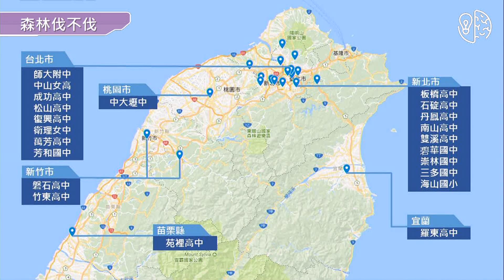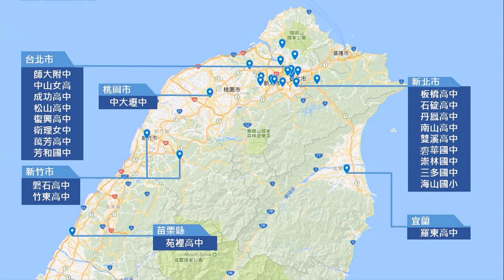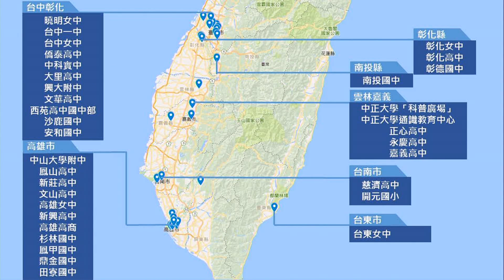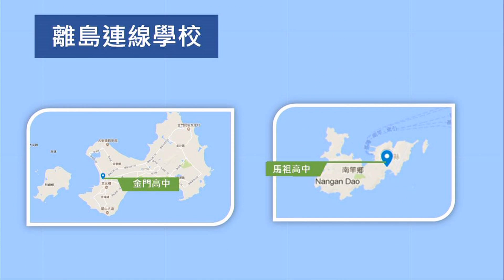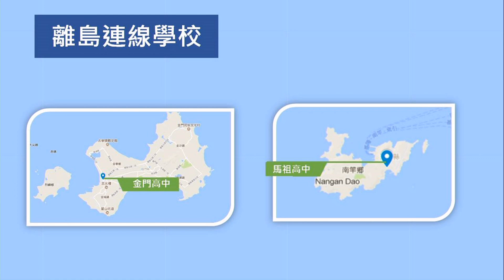今天的场地是一间很棒的学校——东山高中，谢谢你们。除了现场的同学之外，我们还有很多线上的同学一起在观看节目。现在大家应该可以看到一张直播地图。这一次离岛有两间连线的学校，分别是马祖高中和金门高中，还有海外连线学校——马来西亚的三所高中，欢迎你们。